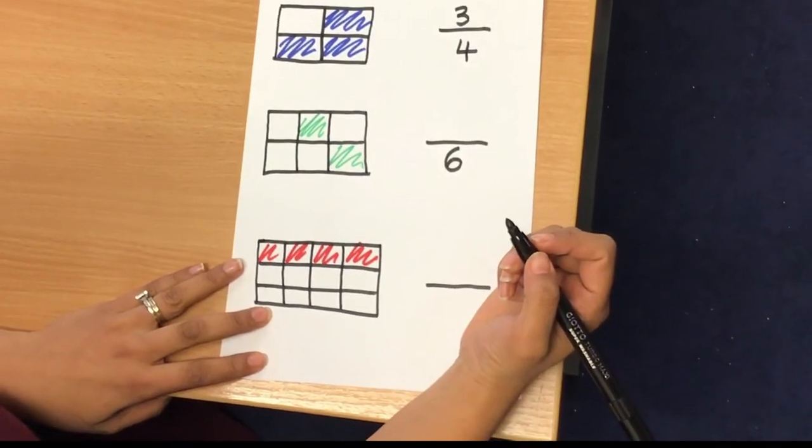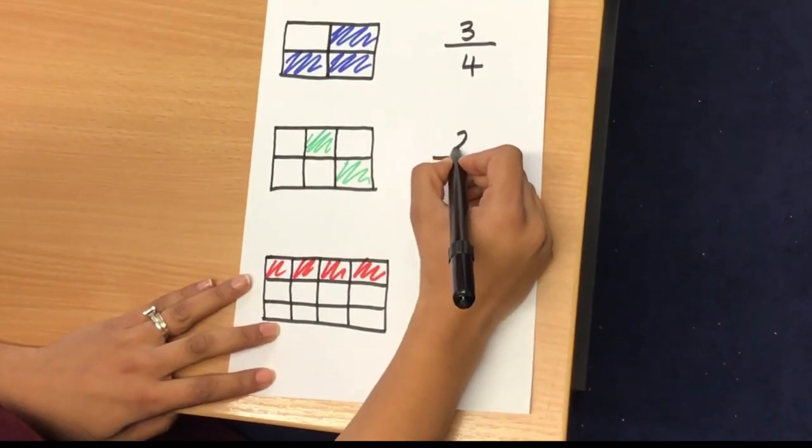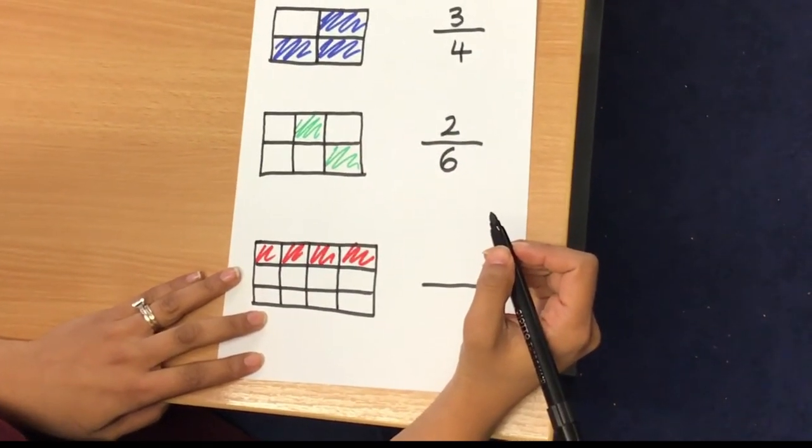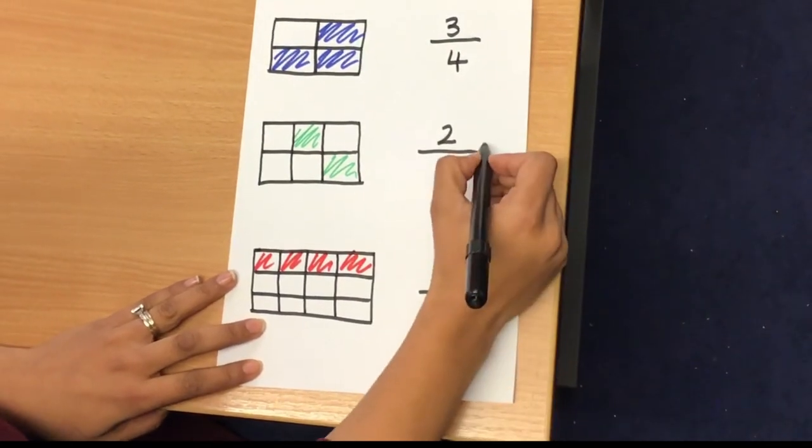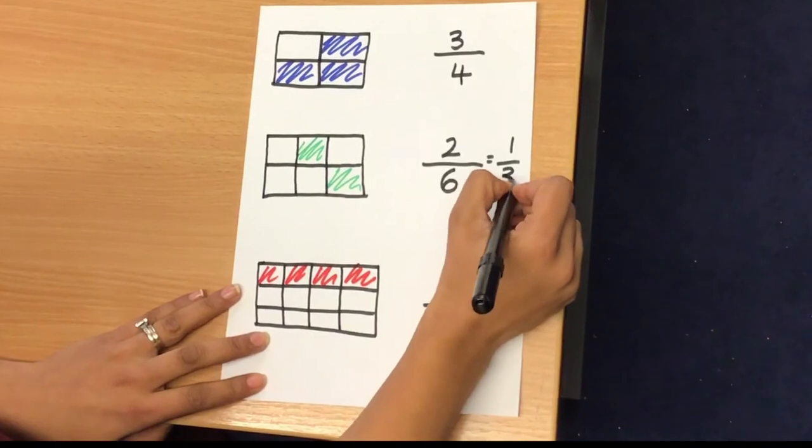How many do I have shaded here? I have one, two. Therefore, this fraction represents two sixths. Those of you that are quite advanced in maths will know that the equivalent of this is one third, if you wish to write it like that.